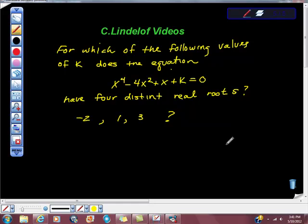Okay, so here's another question I got. I'm trying to answer all these questions. For which of the following values of k does the equation x to the 4th minus 4x squared plus x plus k equals 0 have four distinct real roots? x is negative 2, x is 1, or x is 3?